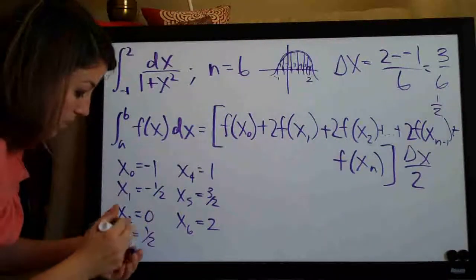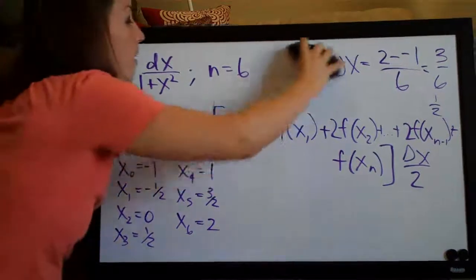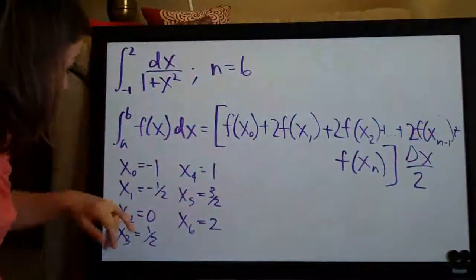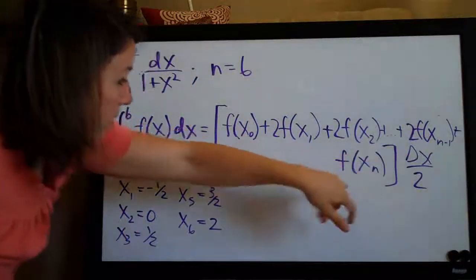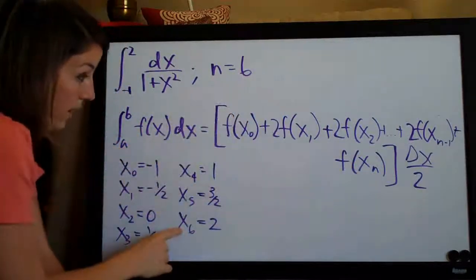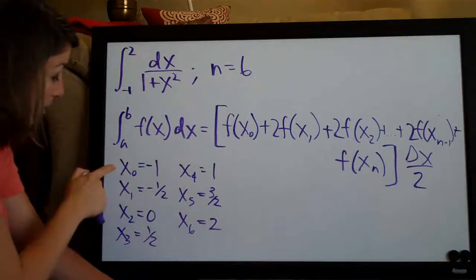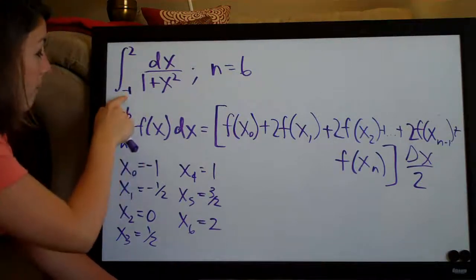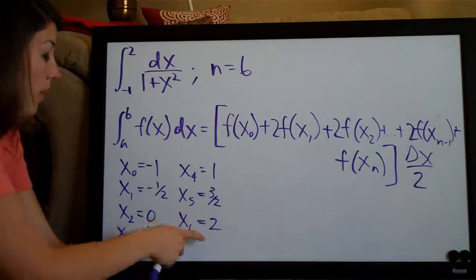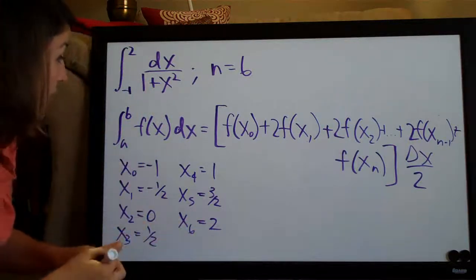So these are our values of x that we're going to use to plug into this function. See, we have x0, x1, x2, on and on and on, all the way to xn. See x of n, n is 6 and we've got x of 6 here. So that's why we found these values. So you just find delta x, then you write down your first value as x0 is the bottom number. You add delta x each time until you get to the second number or the top number here and then you're done. You know you have all your x values.